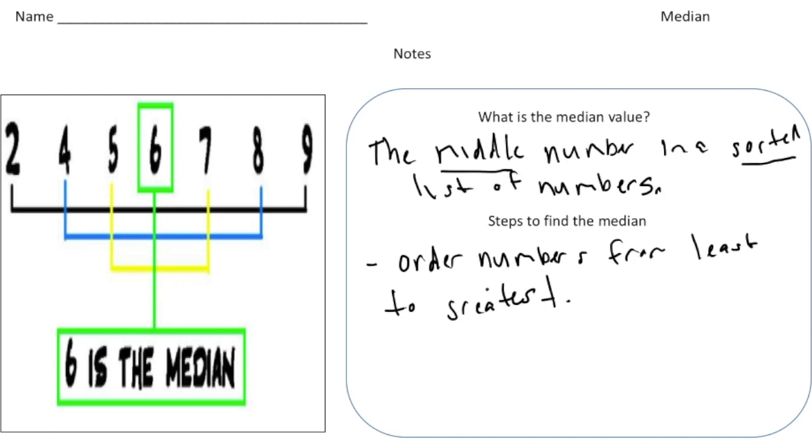So for example, over here we have the numbers two, four, five, six, seven, eight, nine. They're already in order from least to greatest. And then the last part is find the middle number.